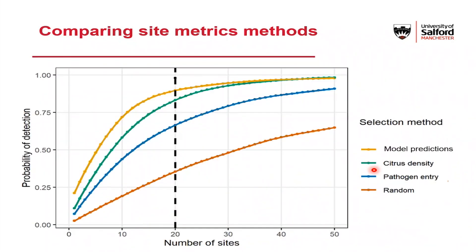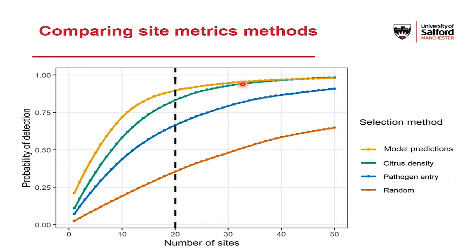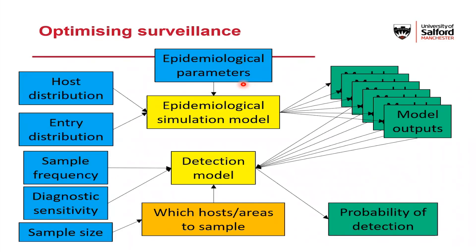So how do these different methods compare? Has our model approach actually improved upon looking at citrus density alone or where the pathogen is likely to enter? We compared the different approaches. This graph shows how our probability of detection on the y-axis varies as we sample more sites — as you'd expect, detection probability increases as you sample more sites. If we just select randomly, we see an almost linear increase. But you can clearly see our model approach is outperforming all of the other approaches, although in some cases the model approach and citrus density alone perform fairly similarly.